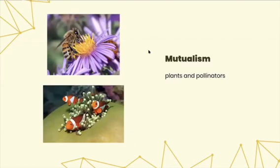In mutualism, as you can see in the pictures, there are plants and pollinators, where both species and organisms are able to benefit from each other.